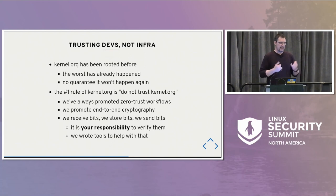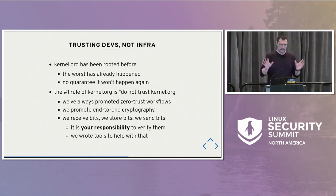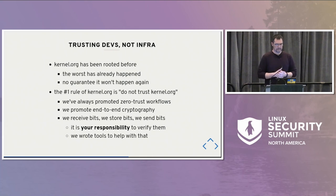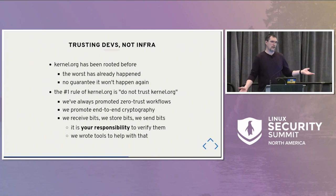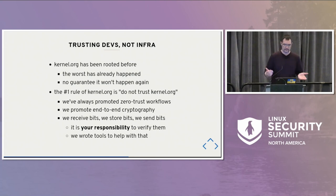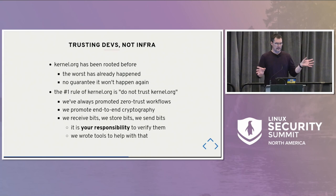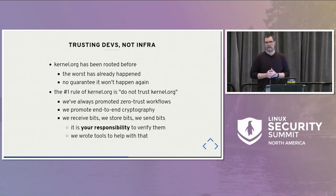We always come back to the same point: it's important to trust the developers, not the infrastructure in which the kernel.org stuff resides. Kernel.org has been rooted before — it's been 12 years since that incident. There's no guarantee it won't happen again, and no guarantee it hasn't happened again without us knowing. Number one rule of kernel.org: do not trust kernel.org. We try to promote zero-trust workflows. Trust your fellow developer. We just send bytes, store bytes, receive bytes. It is your responsibility to make sure they haven't been corrupted, either unintentionally or maliciously.